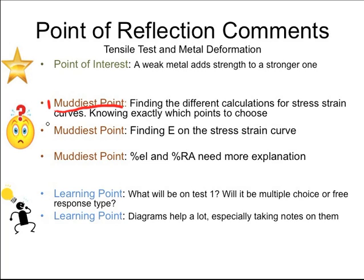These three, one, two, three, given muddiest points are direct quotes from students. These all are concerning the tensile test and finding certain values, so different calculations for the test, such as finding E or percent elongation or percent reduction of area. So in order to best address this, I am going to take a normal stress-strain curve and find all the values that you want to know, such as tensile strength, percent elongation, elastic modulus, etc.